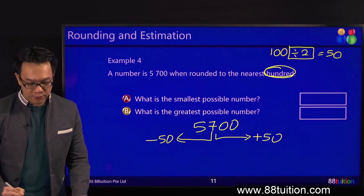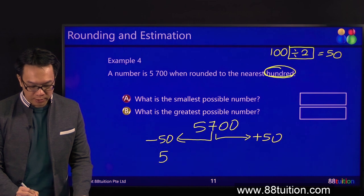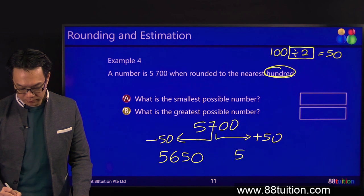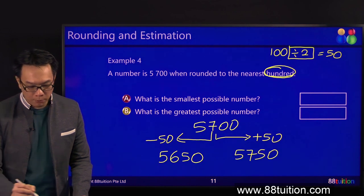Okay? 700 minus 50. 700 minus 50 is 650. 700 plus 50. Remember, one more standard step.